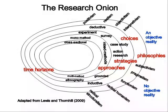The fifth layer from the outside of the research onion talks about the time horizons, where we conduct the research at one point in time, which is cross-sectional, or over a long period of time to observe changes over time, and that's longitudinal research.